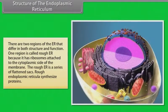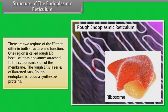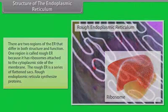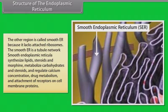There are two regions of the ER that differ in both structure and function. One region is called rough ER because it has ribosomes attached to the cytoplasmic side of the membrane. The rough ER is a series of flattened sacs; rough endoplasmic reticulum synthesizes proteins. The other region is called smooth ER because it lacks attached ribosomes. The smooth ER is a tubule network. Smooth endoplasmic reticulum synthesizes lipids, steroids, and morphine, metabolizes carbohydrates and steroids, and regulates calcium concentration, drug metabolism, and attachment of receptors on cell membrane proteins.